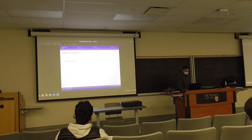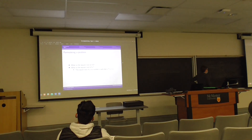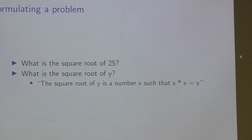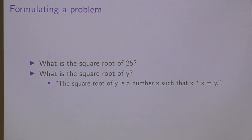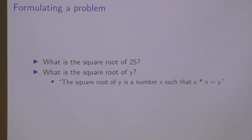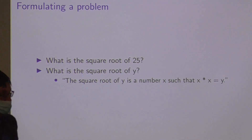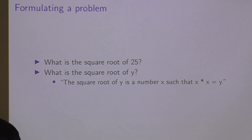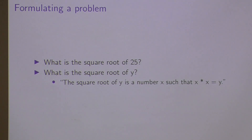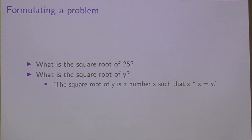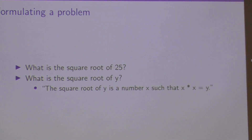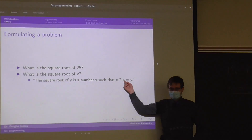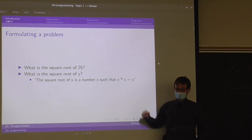Let's formulate some problems. What is the square root of 25? Five. What is the square root of some number y? The square root of y is some number x such that x times x is equal to y. This is a description of the problem. From this description, we can create an algorithm which calculates a square root — we're going to be doing that a little later on in the class. This is a problem description from which an algorithm can be composed.